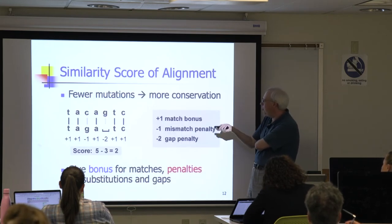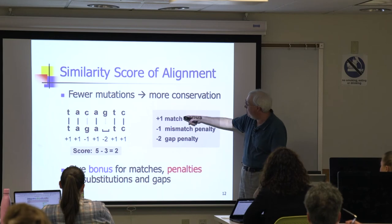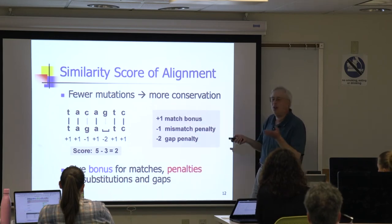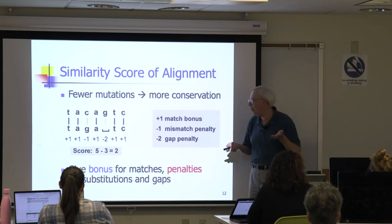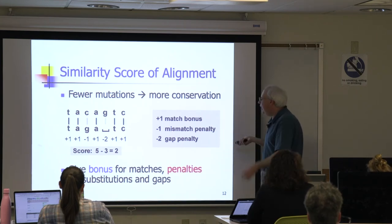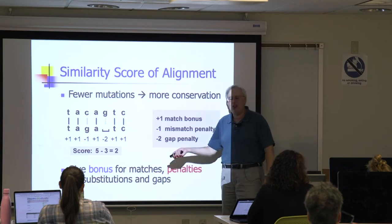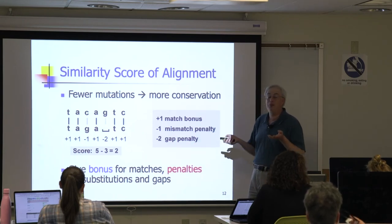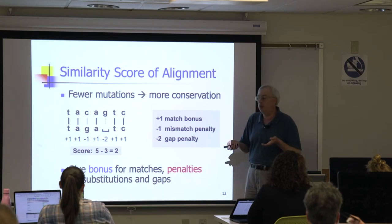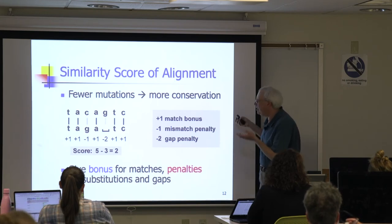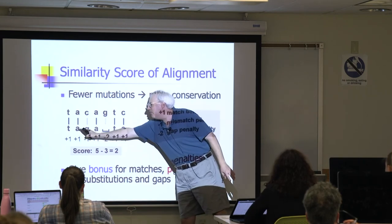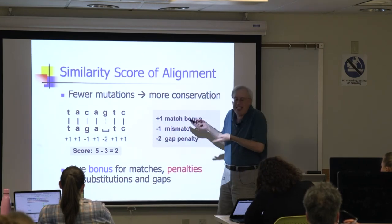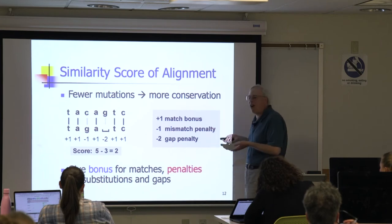We can get a bit fancier — assign a bonus everywhere there's a match, a penalty for a mismatch, and a bigger penalty where a base got inserted or deleted, then add up the scores. That's actually what BLAST is doing. Once you have the alignment, the scoring is the easy part. Fewer mutations mean more conservation; higher scores mean essentially more conservation — better evidence of conservation.